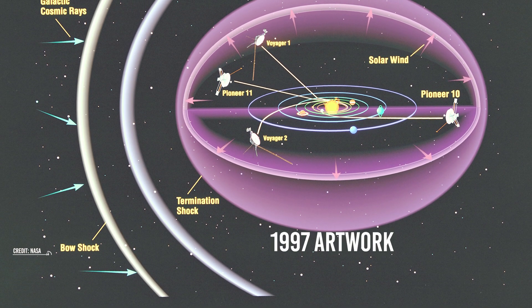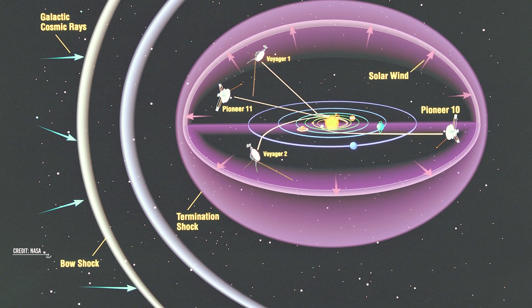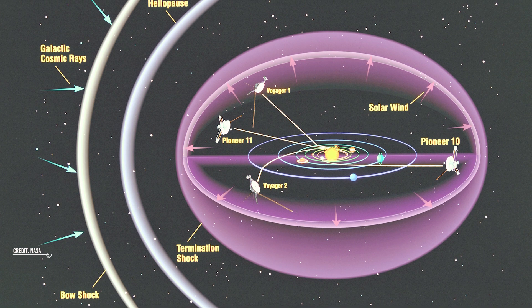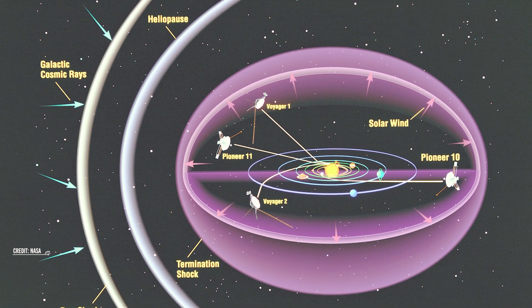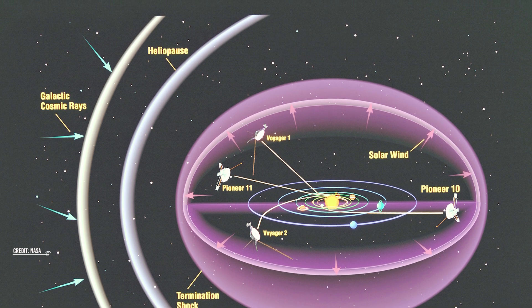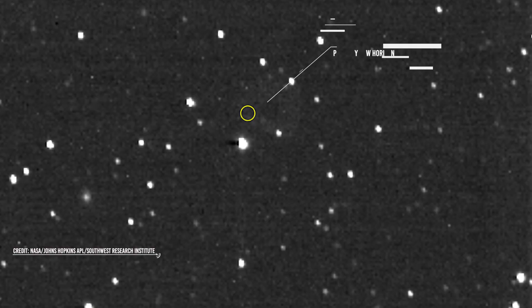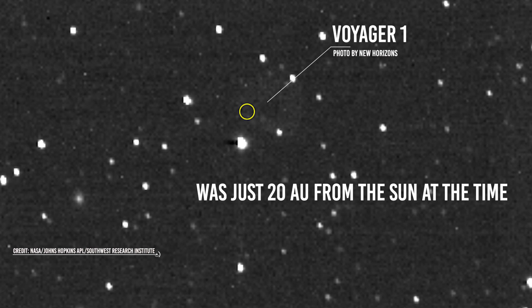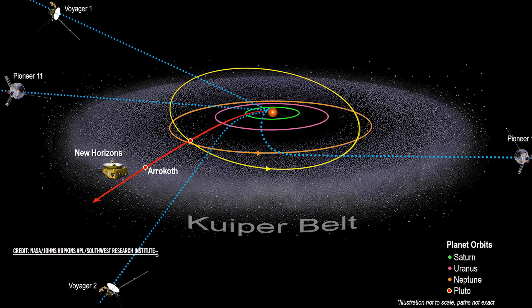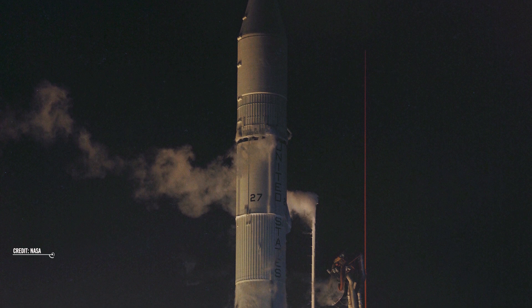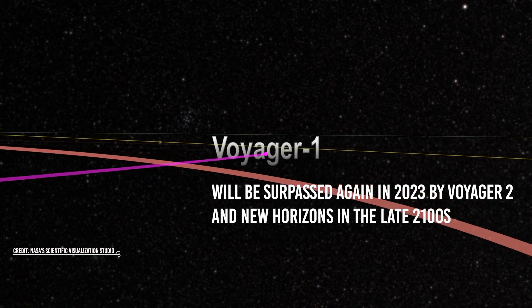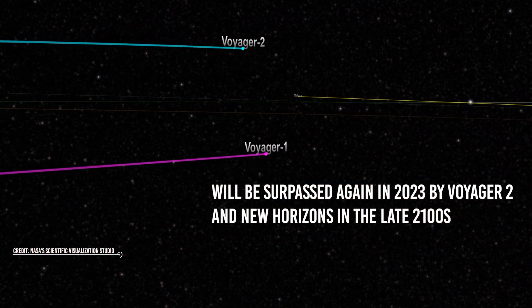This 1997 artwork depicts the planets of the solar system as well as the respective paths of the solar system's first four spacecraft. Voyager 1 passed Pioneer 10 in 1998, and it passed the heliopause and reached the interstellar space in 2012. Voyager 2 entered interstellar space in 2018, and will not pass Pioneer 10 until 2023. So we have a strong suspicion that Pioneer 10 is also in interstellar space, but is no longer operational. New Horizons, which was just 20 astronomical units away from the Sun at the time, is now more than 150% further, at over 50 AU. It will eventually pass both Pioneers, but never either Voyager. Although Pioneer 10 was the first spacecraft launched in 1972, on a course that would take it outside the solar system, it was exceeded in 1998 by Voyager 1, and will be surpassed again in 2023 by Voyager 2 and New Horizons in the late 2100s.